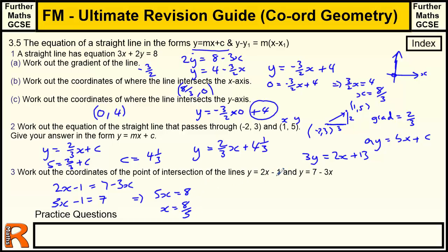If you know x is 8 fifths, then you can work out y by using either of these two equations. So I'm going to just use the first one. So y equals 2 lots of x, which is 8 fifths, minus 1. So y equals 16 fifths minus 1. And 1 is 5 fifths, so that's 11 fifths. You can leave it like that if you want, or you can change them into mixed numbers or decimals, whatever you like to do. But I'm just going to leave it as, so the point of intersection is 8 fifths and 11 fifths.